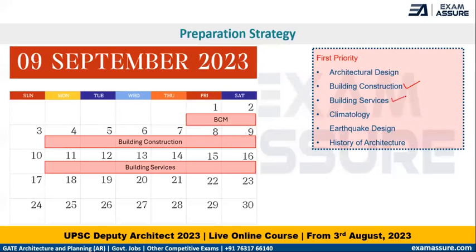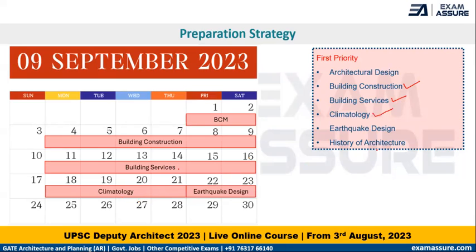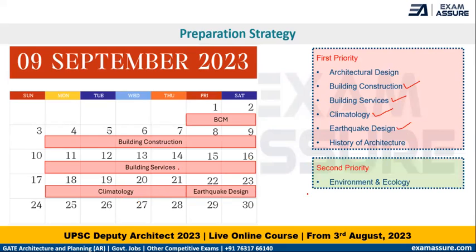Then we can move on to Building Services for another week — and by one week I mean just six days, Monday to Saturday. Then once we are done with Building Services, we can finish off Climatology in another four days. Two days for Earthquake Design. And with that, we are done with our first priority subjects.